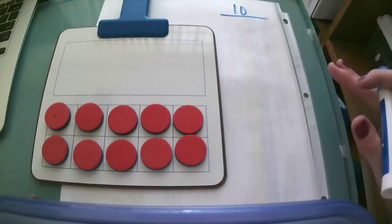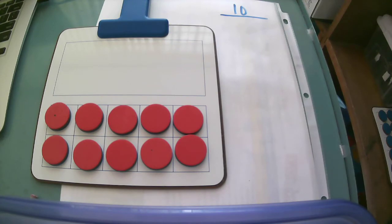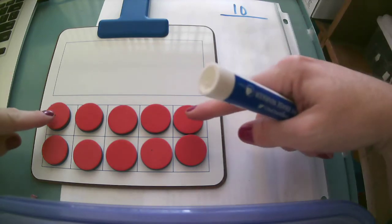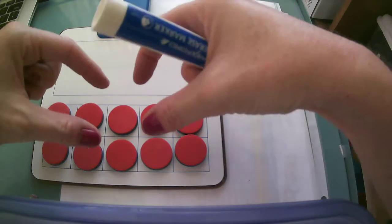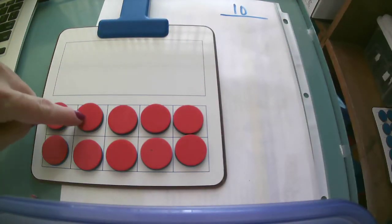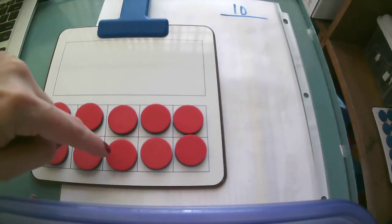If you take a look at my 10-frame right now, I know I have 10 red dots because I have filled up a 10-frame. One, two, three, four, five, six, seven, eight, nine, ten.